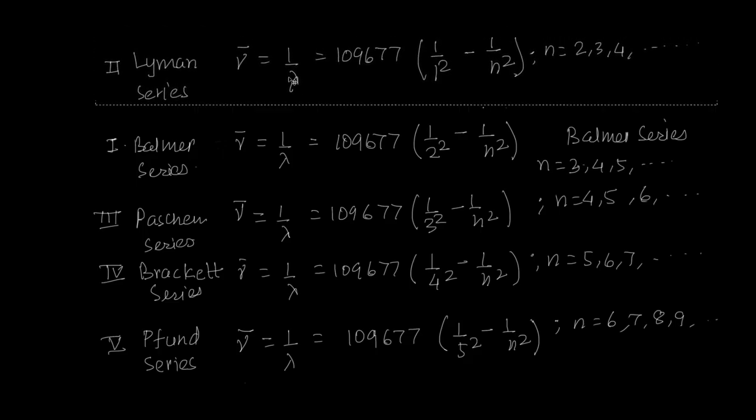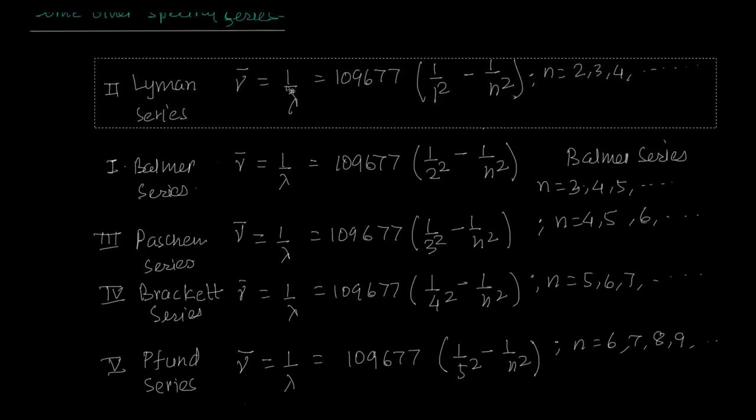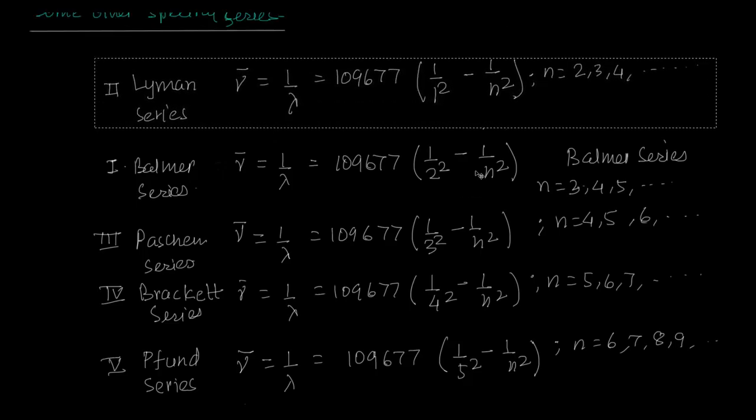Then you'll see some pattern to it. What happens? The first one is 1 upon 1 square, 1 upon 2 square, 1 upon 3 square, 1 upon 4 square, 1 upon 5 square. And the next one has just to be 1 higher and higher, higher than that. The next n has to be higher than that.